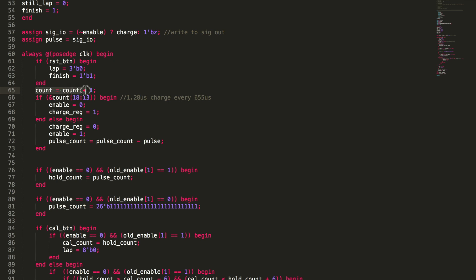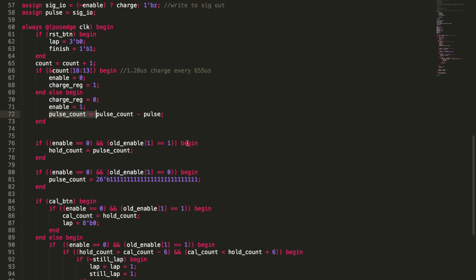Here's your counter. We always try to put our counters up in front of the always loop. As long as they're always going to happen every single count, every single clock. If we get our reset, we're going to set the lap to zero and finish to one. Then we've got an if statement here for count 18 down to 13. This is the same thing that I'd show before. I would just kind of move the variables around to give different charge rates. You can see here, that's 1.28 microsecond charge every 655 microseconds. And at that point, if this and count is all ones, then you're going to enable set enable to zero and set charge register to one. Otherwise you're going to set charge register zero and set enable to one. Then we're going to set the pulse count equal to pulse count minus the pulse. And so that's us measuring that actual wave.